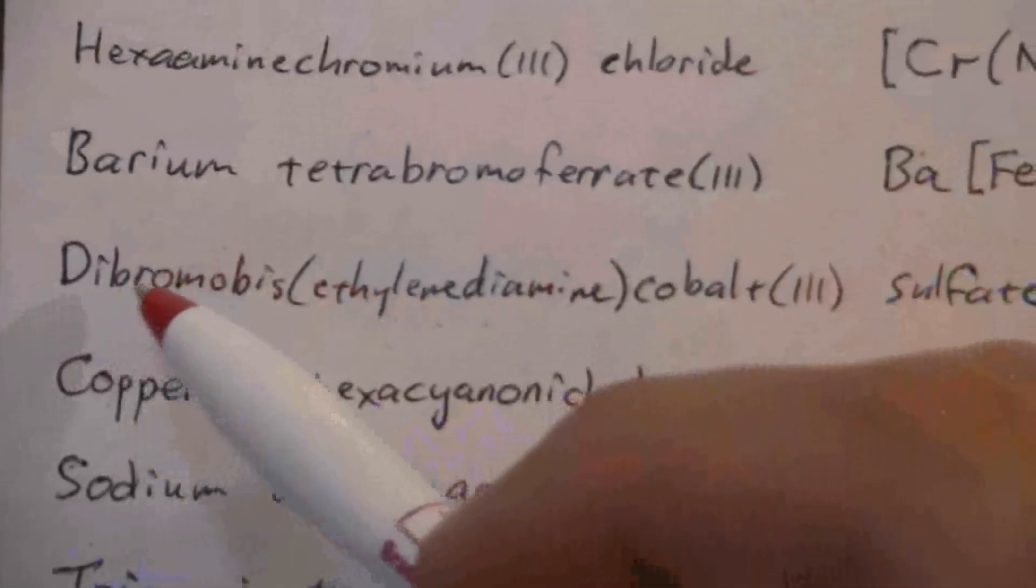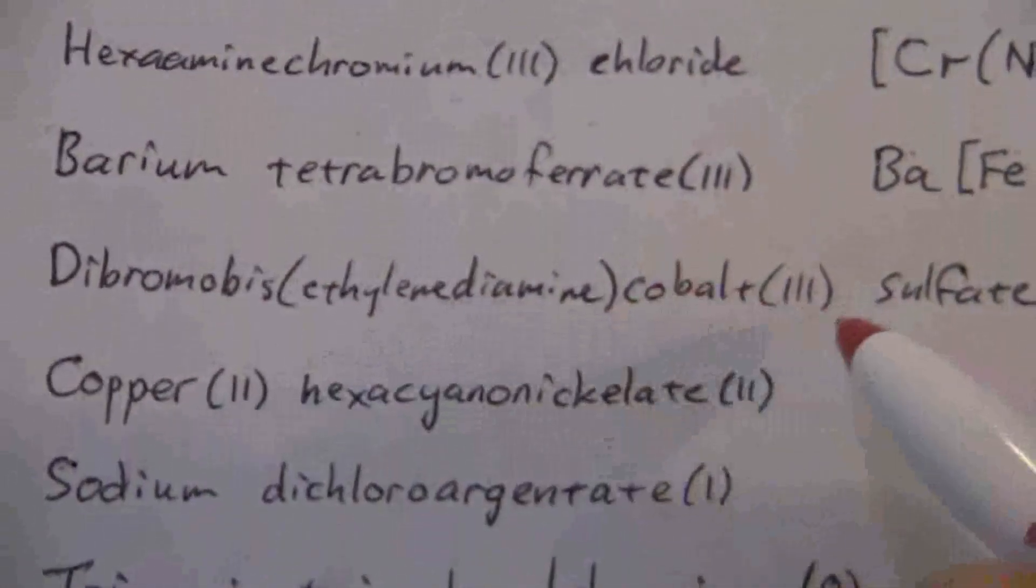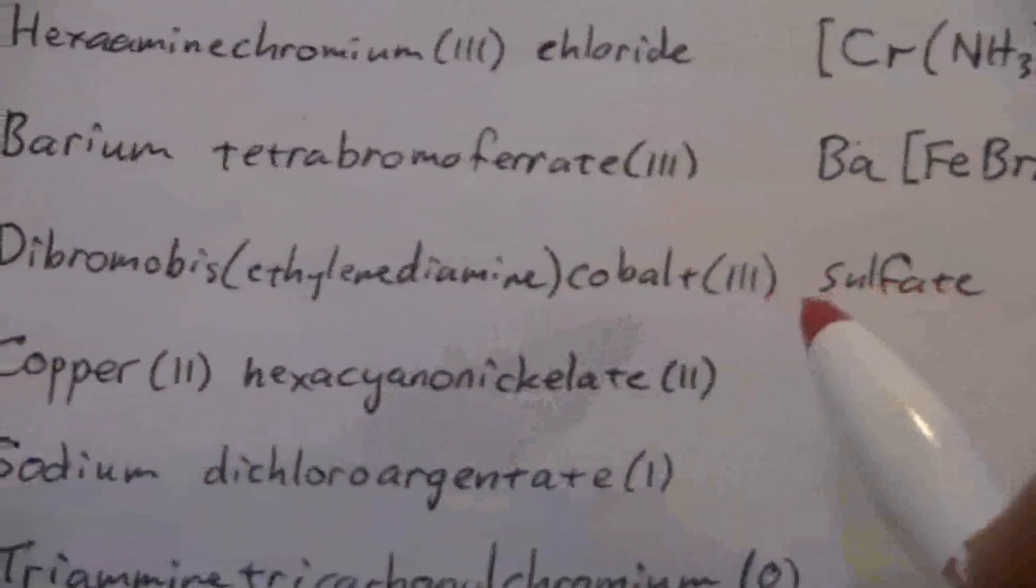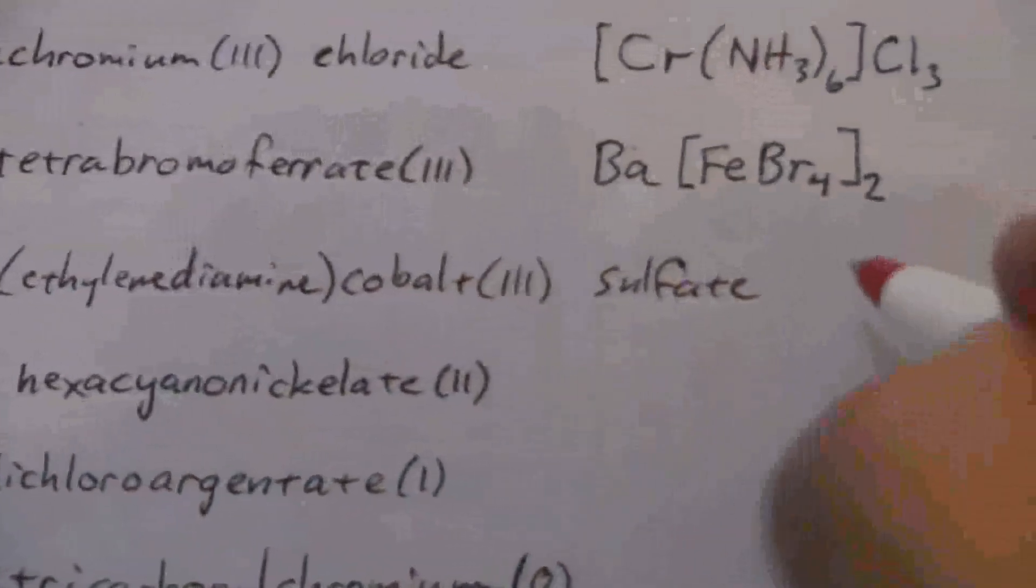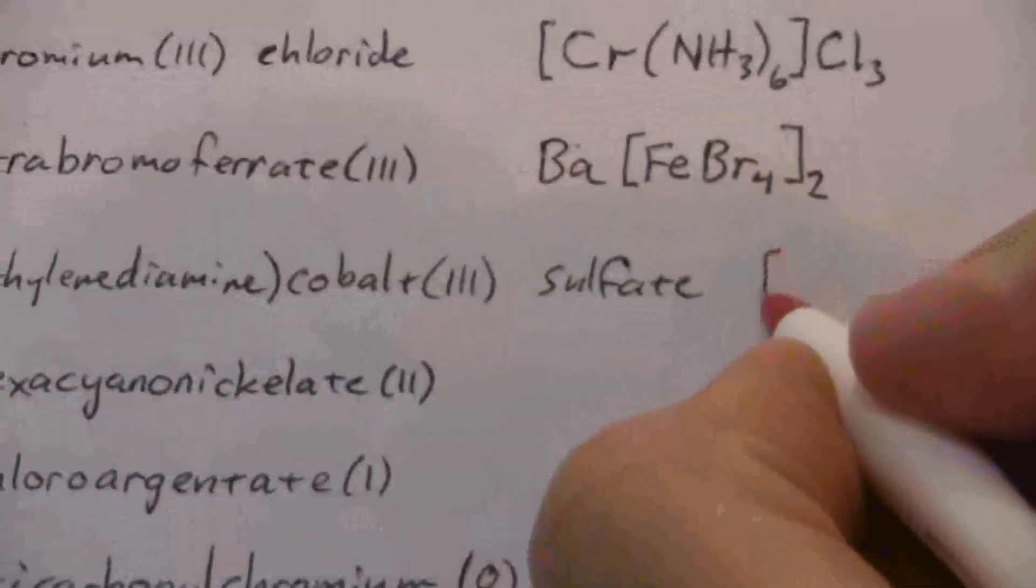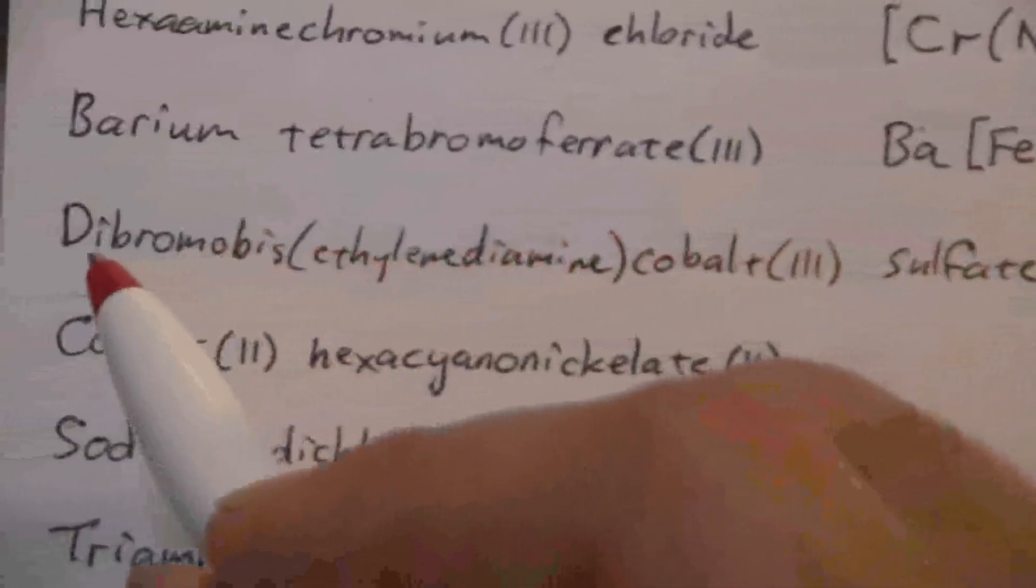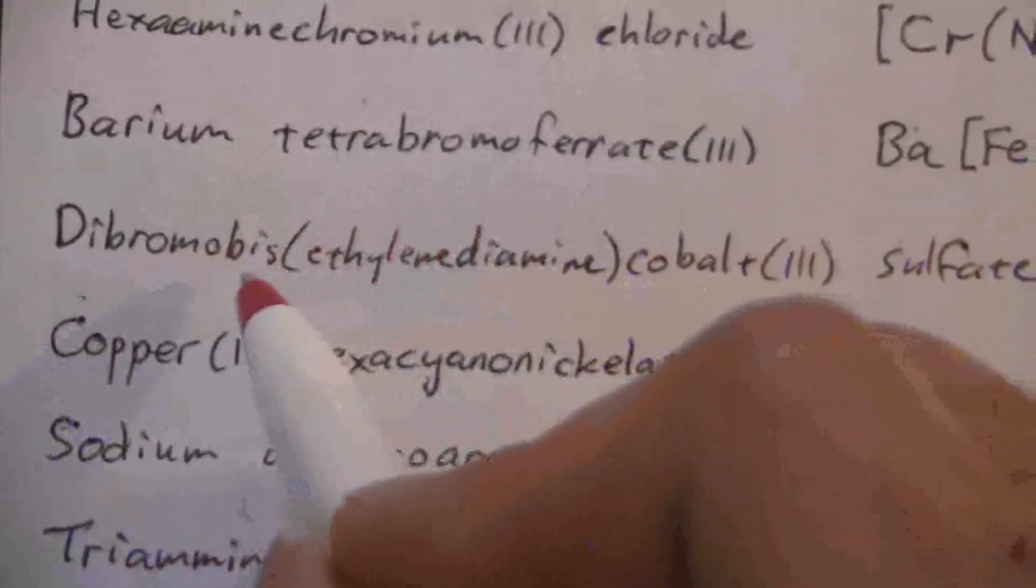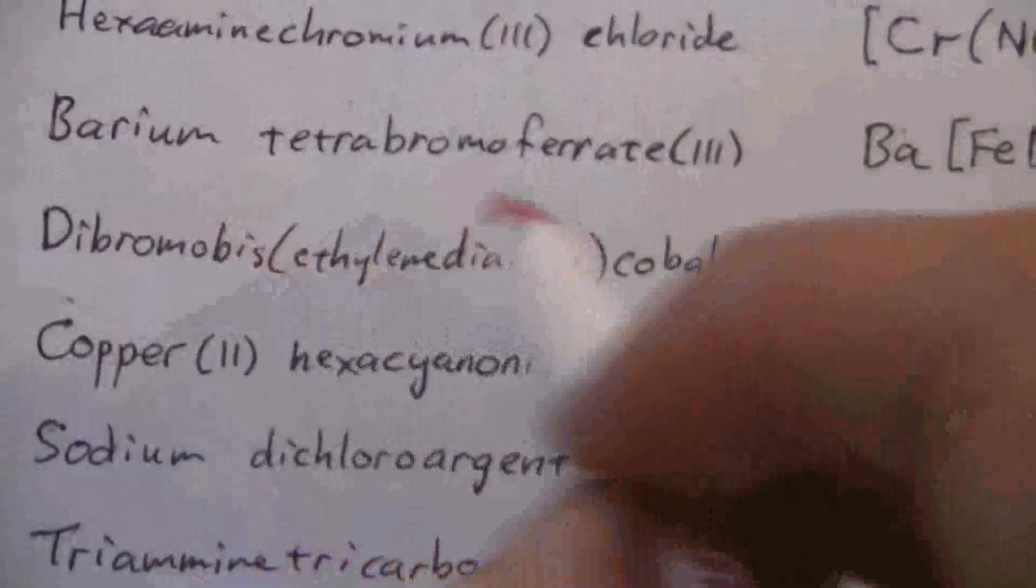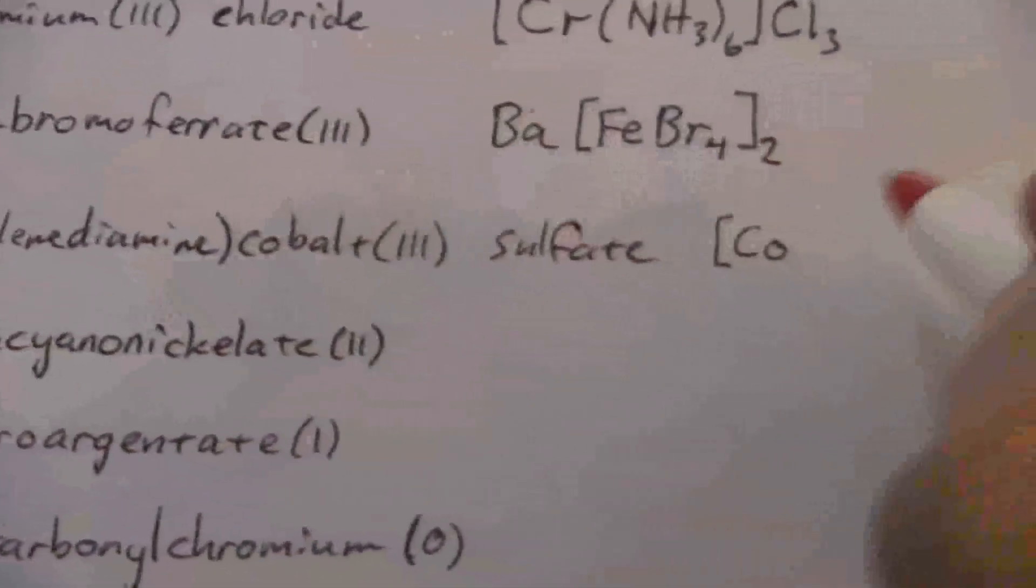Now here I have dibromo, bis(ethylenediamine), cobalt(III) sulfate. So here's my cation, and there's the anion. So the cation is a cobalt compound, and we have dibromo and then bis(ethylenediamine). Now we always write the neutral ligands first and then the ionic ligands.